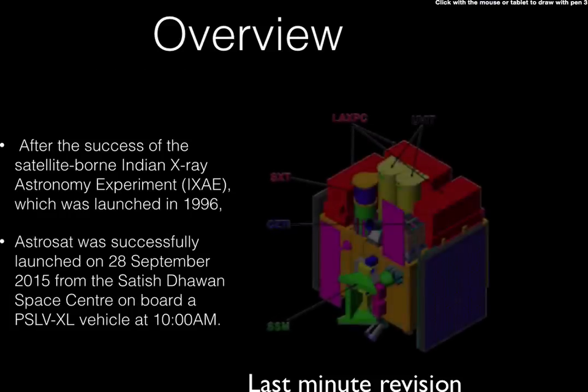For the overview: after the success of the Indian X-ray Astronomy Experiment (IXAE), which was launched in 1996, the Indian research organization gave permission for the expansion of that project and to build AstroSat. AstroSat was successfully launched on 28th September 2015 from the Satish Dhawan Space Center on board PSLV-C40.